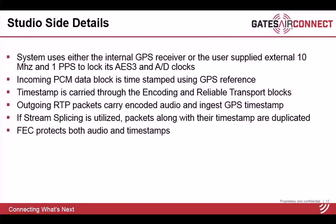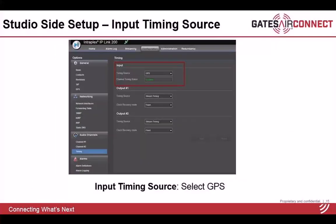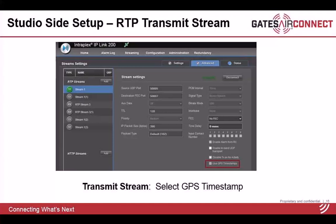When using reliability techniques, they protect not only the audio data but also the timestamp. On the studio side setup, the first step is selecting the GPS reference — internal or external GPS. The second step is selecting the timing source for the input channel used for SyncroCast; you must select GPS. The third step is checking the 'use GPS timestamp' checkbox on the RTP transmit stream used for SyncroCast. Those are the three steps required to set up SyncroCast on the studio side.